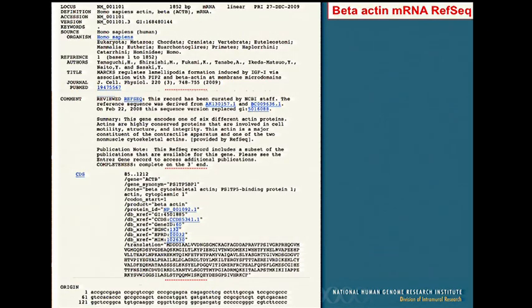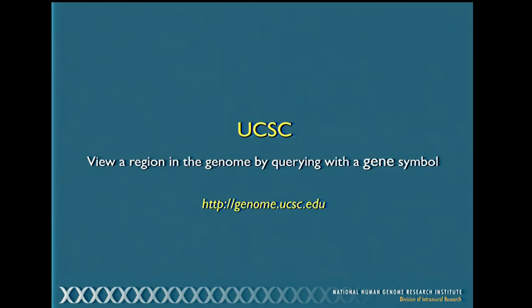Here's an example of the beta-actin reference sequence. It looks like a normal sequence but with a distinctive accession number. You get an overview summary written by NCBI staff, and it also tells you which original GenBank accession numbers this sequence was derived from. I encourage you after class to go back and try some of these examples yourself, because it's one thing to watch me go through this and quite another to try it on your own.